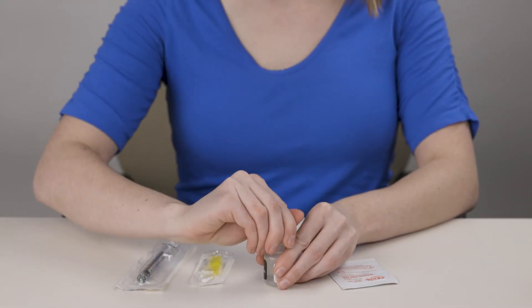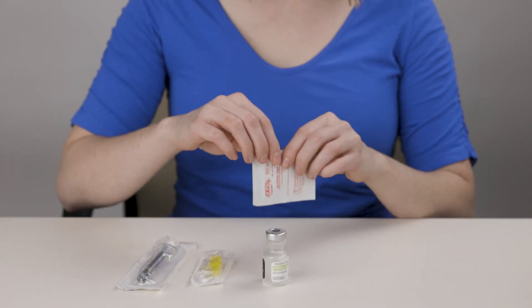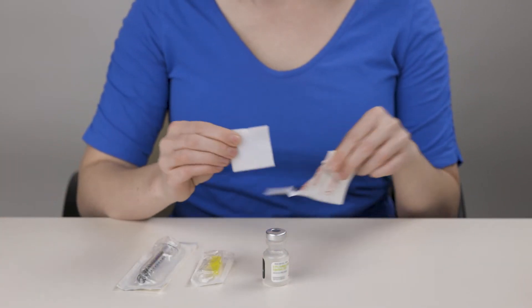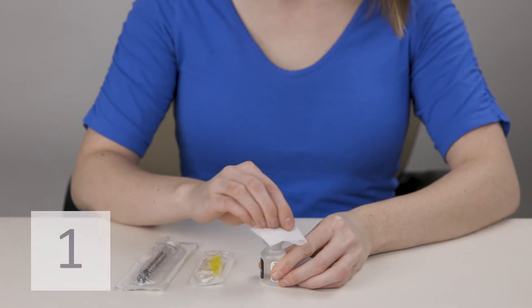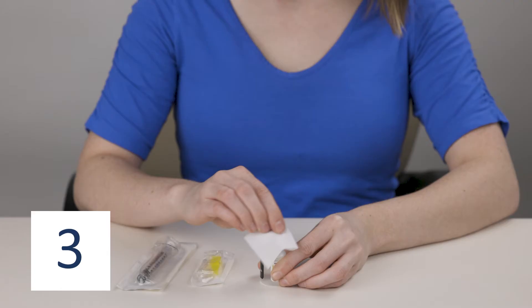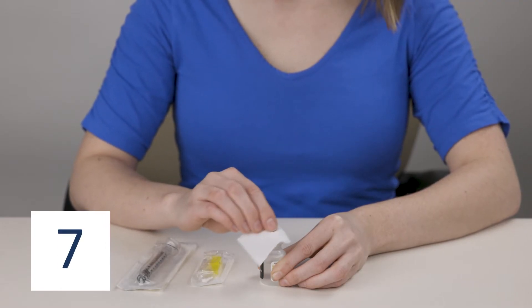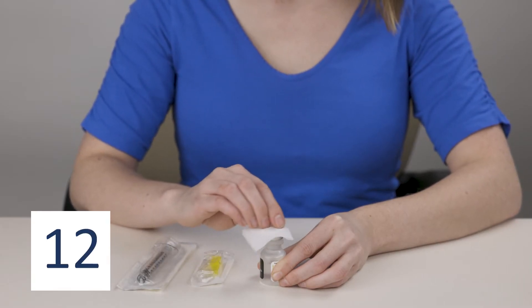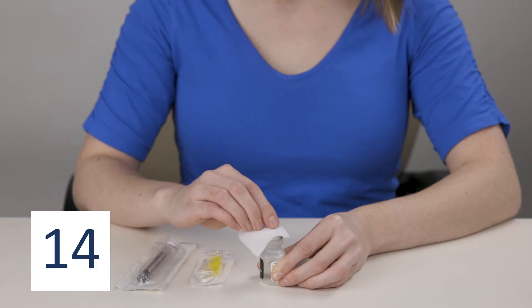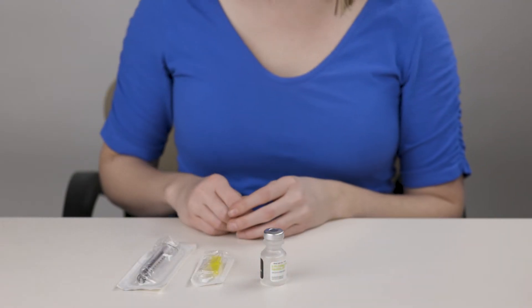Remove the cap from the medication vial. Open an alcohol wipe. Clean the top of the medication vial with the alcohol wipe for 15 seconds. Let the vial air dry for 5 seconds.